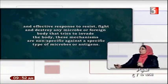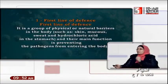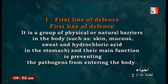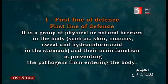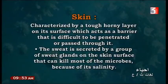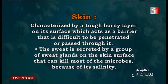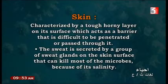The first line of defense consists of physical or natural barriers in the body, such as skin, mucus, sweat, and hydrochloric acids found in the stomach. These prevent the pathogen from entering the body. The skin is characterized by a tough, horny layer on its surface, which acts as a barrier that is difficult to penetrate or pass through. The sweat is secreted by sweat glands on the skin surface and can kill most microbes because of its salinity — meaning increased salt content.